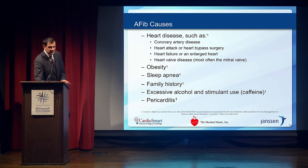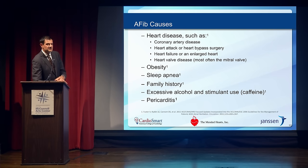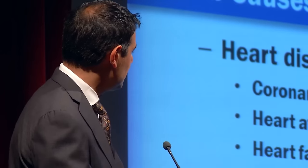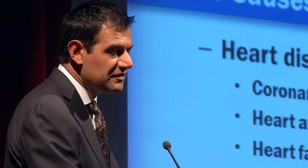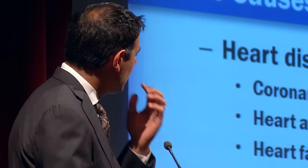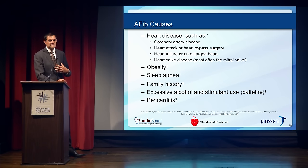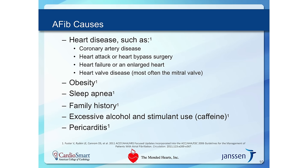If you or your family members have atrial fib, there's a pretty good chance they may also have high blood pressure, because those are two very common conditions that go together. Other contributing conditions include valve problems — a leaky or narrowed heart valve can cause atrial fib — and coronary disease, which leads to hardening of the arteries, blockages, and eventually heart attacks.